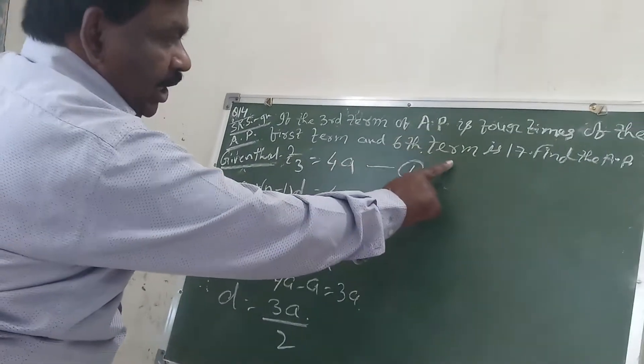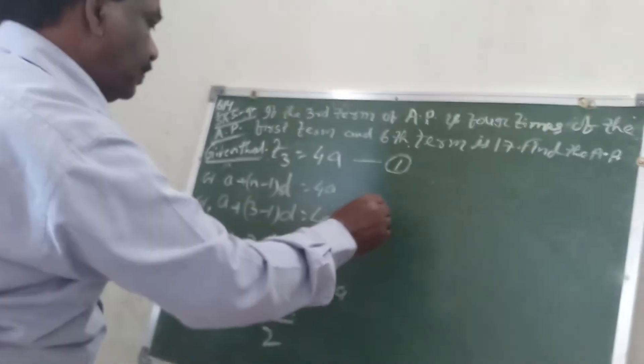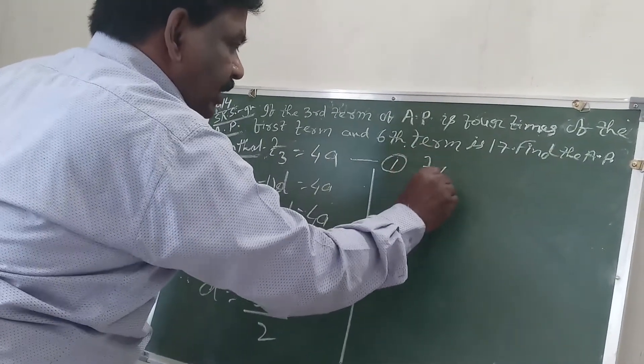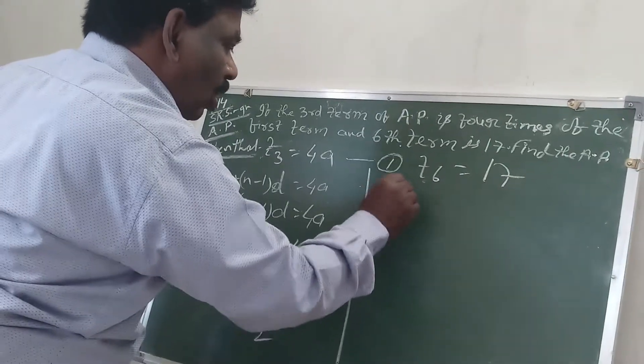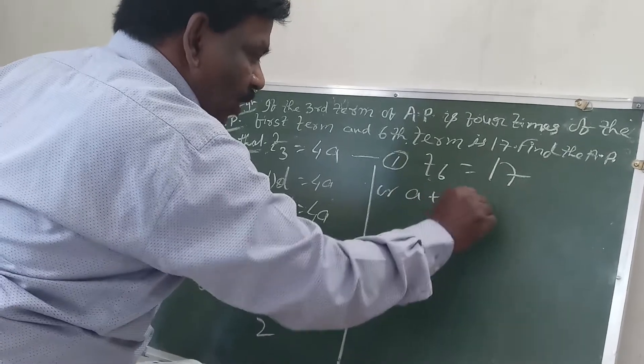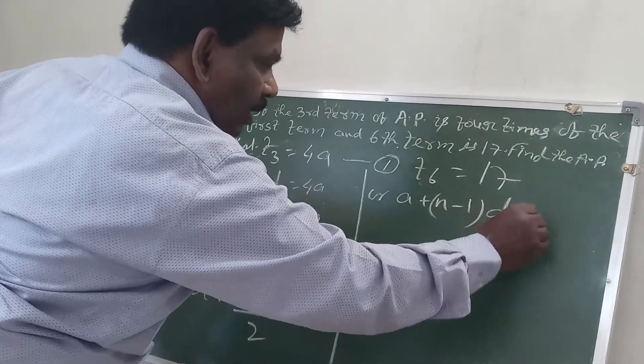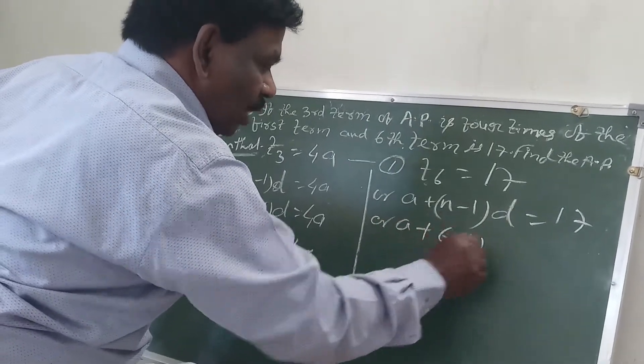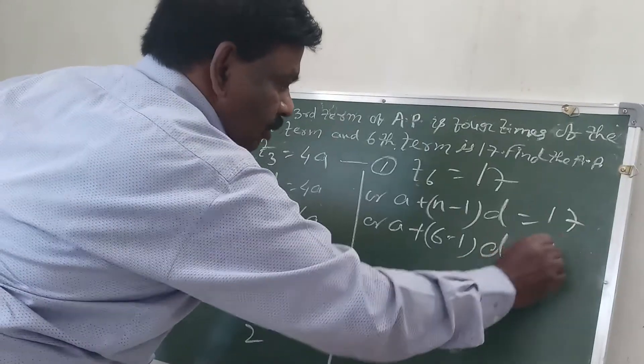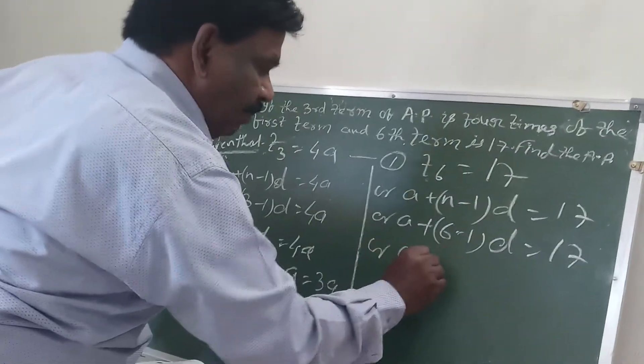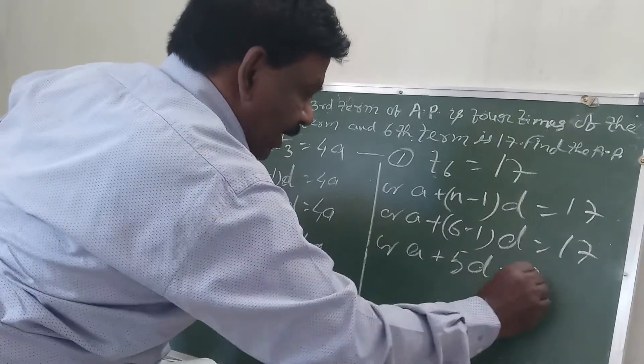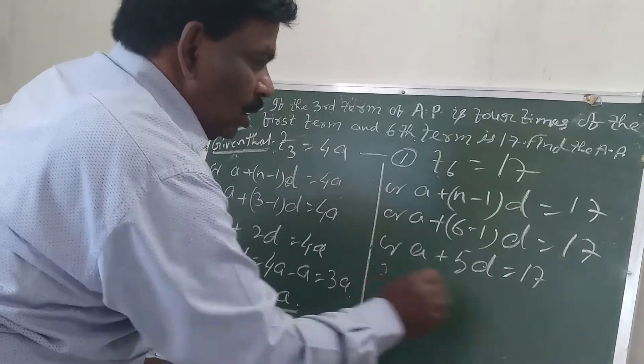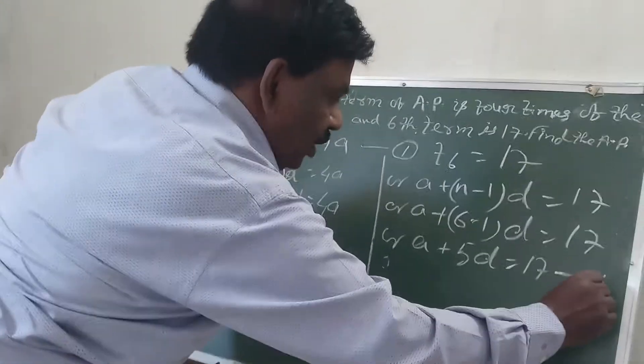And the second part of the question is the 6th term is 17. T6 equals 17, or A plus (N minus 1) into D equals 17, or A plus 5D equals 17. So this is my second equation.